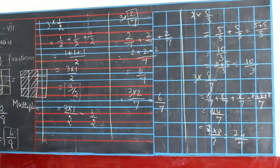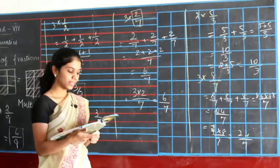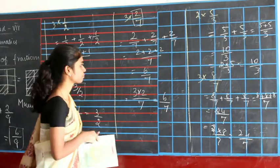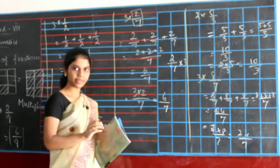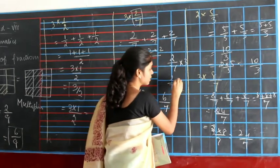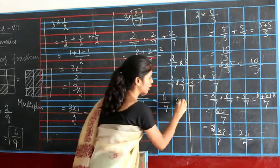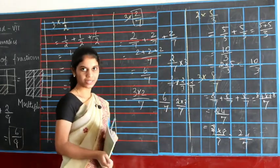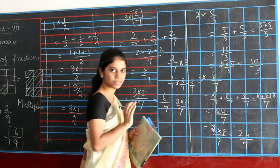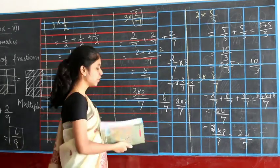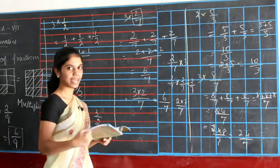We have an exercise. They have given a try-this sum: find 2 by 7 into 3. This is also nothing but 2 by 7 plus 2 by 7 plus 2 by 7, or 2 into 3 divided by 7. They are one and the same. If multiplication is there, whether it is in front or back, it is one and the same — you have to multiply with the numerator. Try those sums they have given and find the answers.